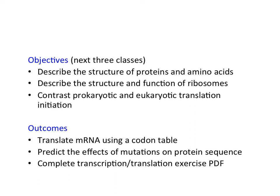Objectives for the next three classes, now that we're talking about translation: understand the structure of proteins and amino acids, the structure and function of ribosomes — the enzymes that actually produce proteins — and then compare and contrast prokaryotic and eukaryotic translation. The goal is to take a messenger RNA molecule, use a codon table and translate it into a protein. You'll need to know where the start codon is, find the stop codon, and use the codon table to do the translating.